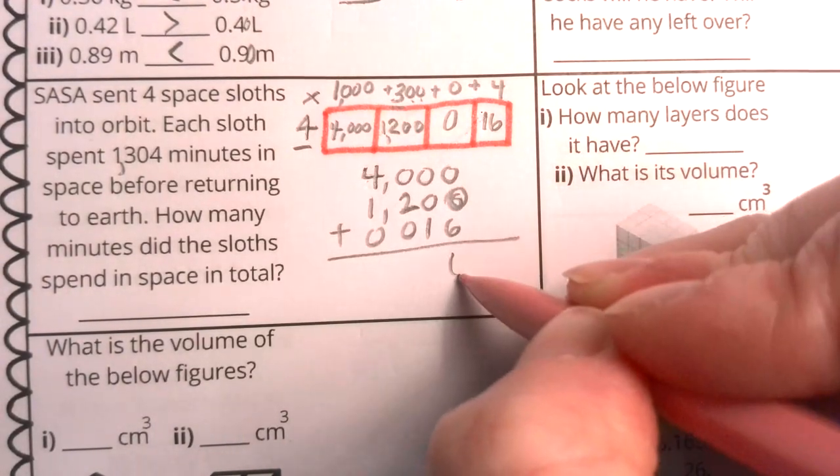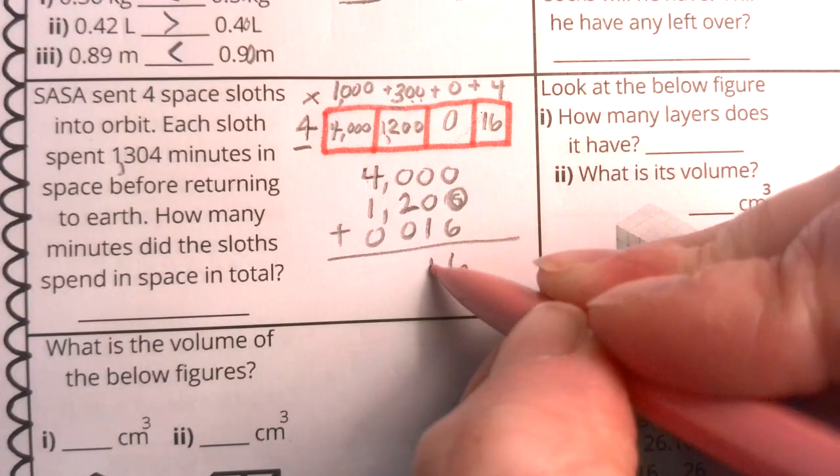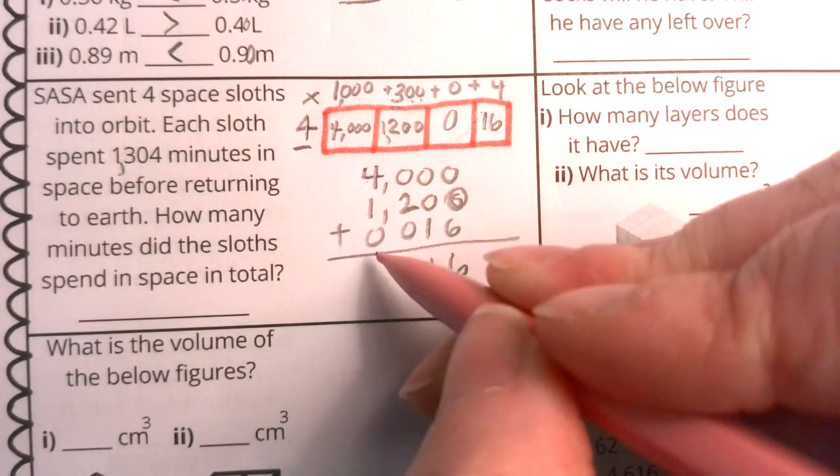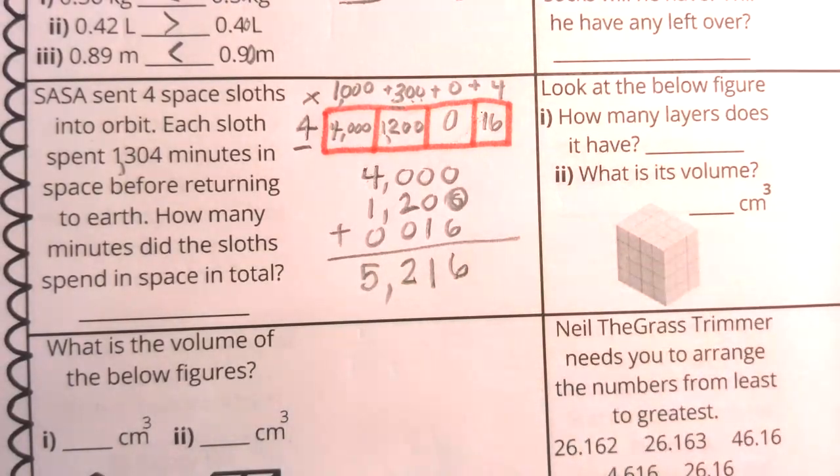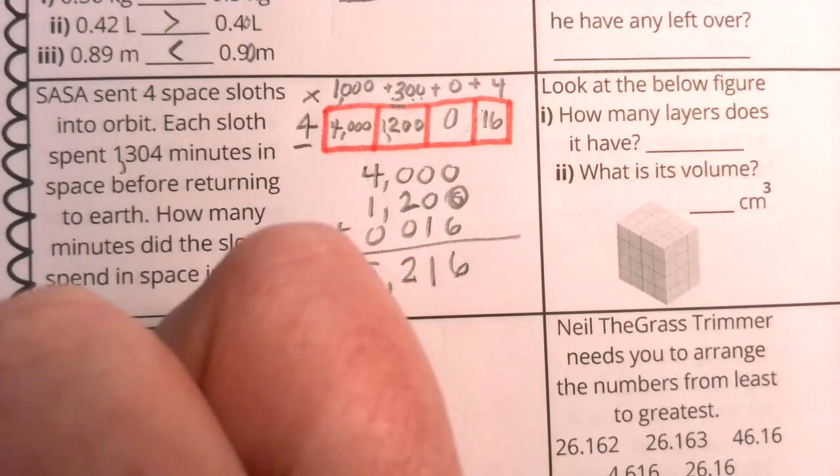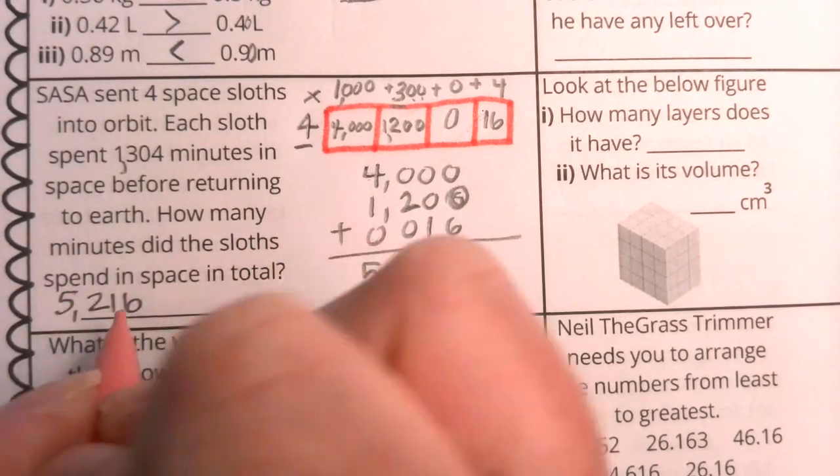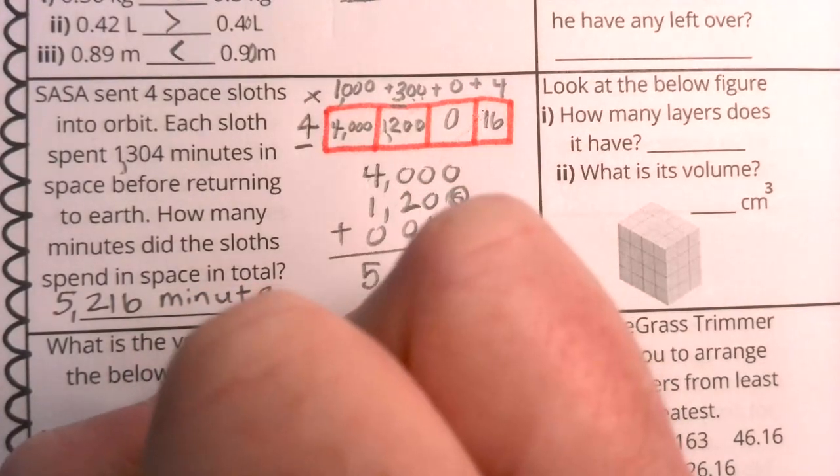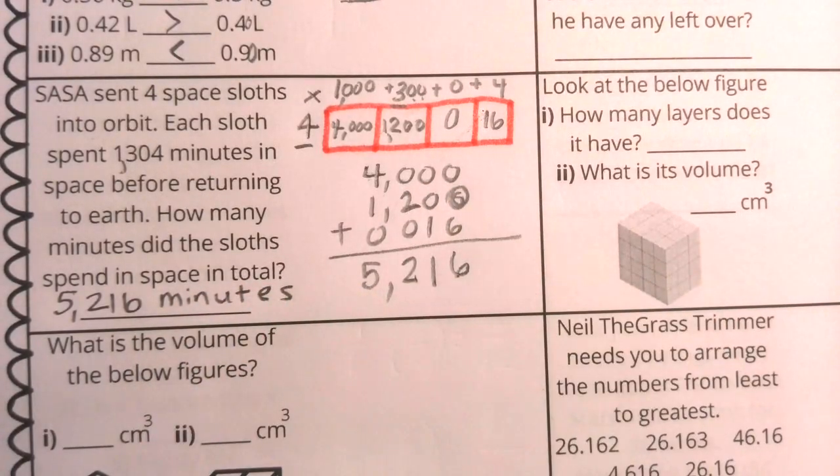0 plus 0 plus 6 is 6. 0 plus 0 plus 1 is 1. 0 plus 2 plus 0 is 2. And 4 plus 1 plus 0 is 5. My answer here is 5,216. Now, 5,216 represents a group of minutes, and it's the minutes that the sloths in total together spent in space.